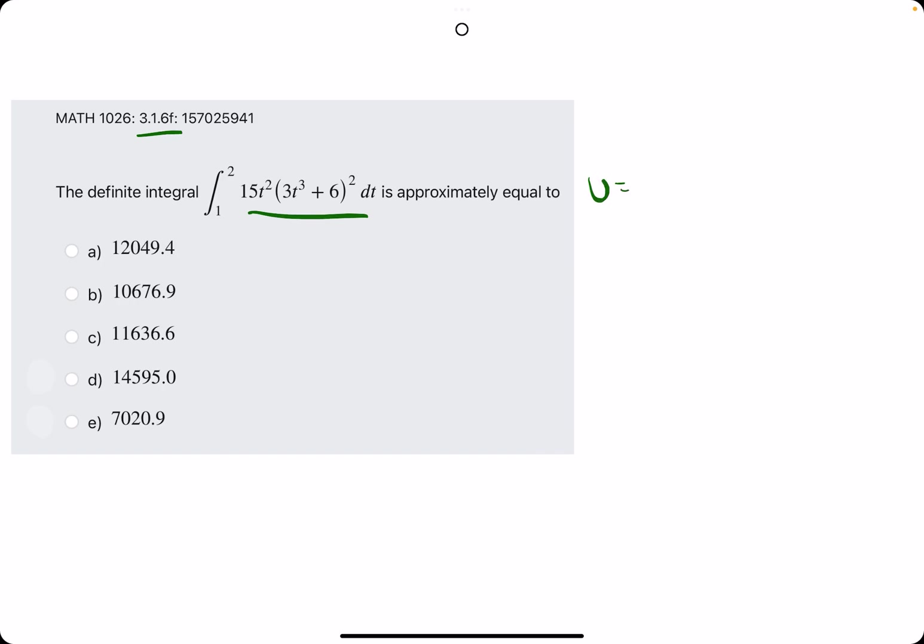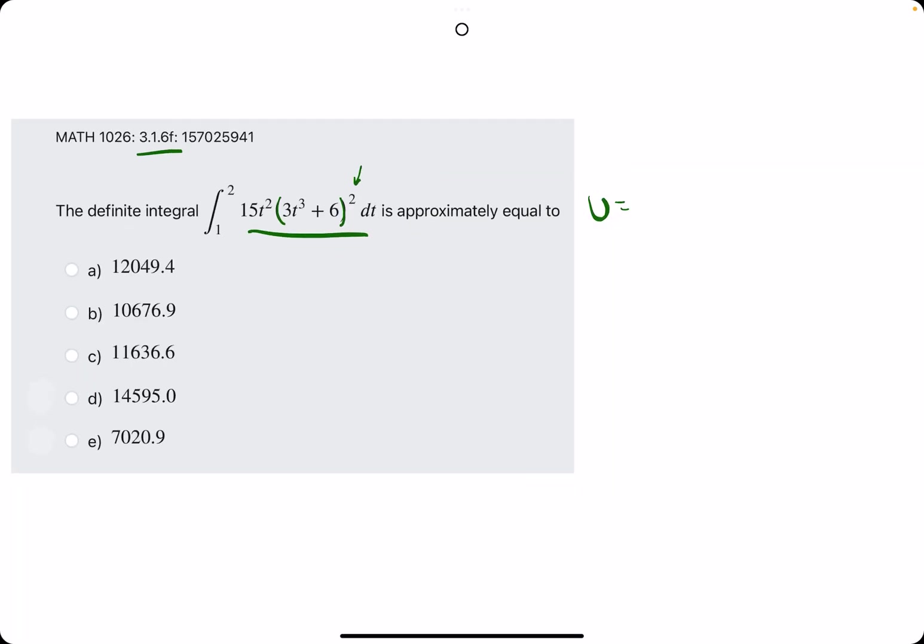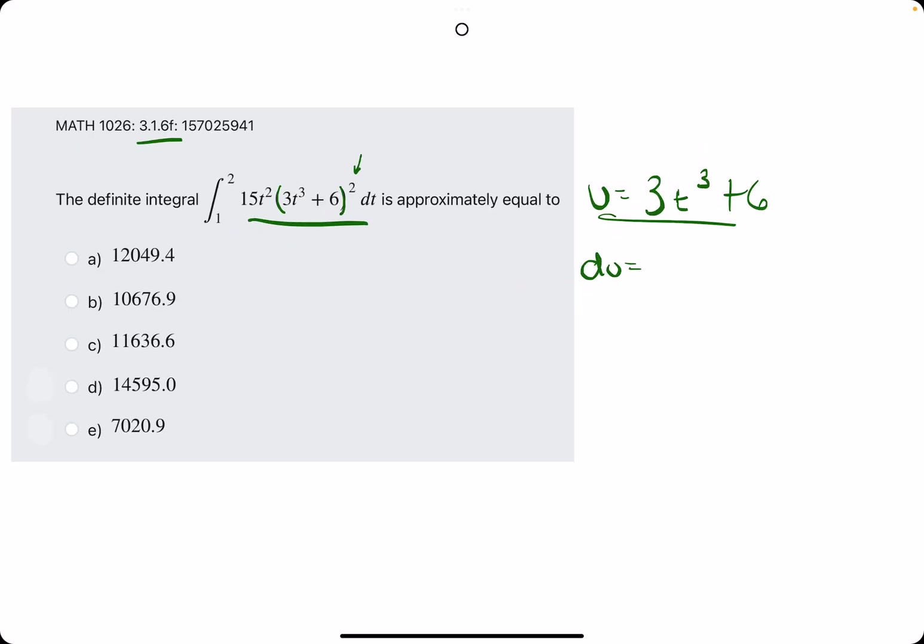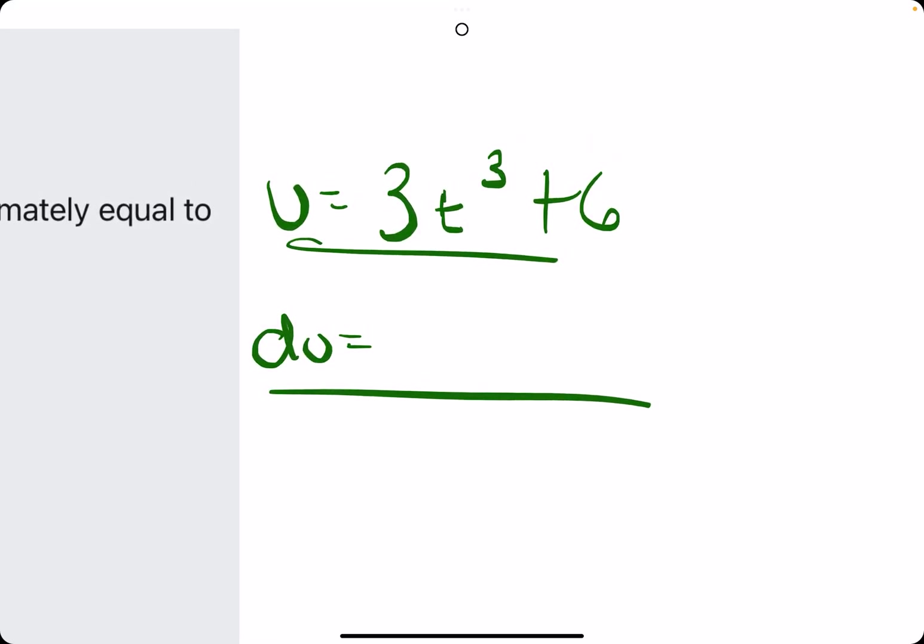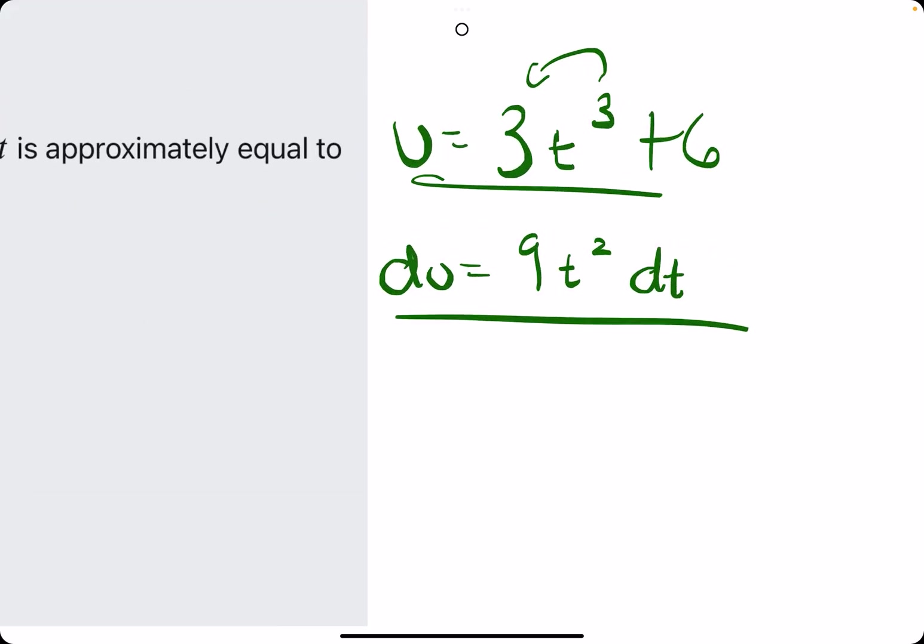We first want to identify what our u is. Generally, u is what's inside parentheses being acted upon by some other piece, and that is the squared in this case. So, usually we can find it in parentheses, and as other exceptions to that pop up, we can discuss them. So, u is 3t³ + 6, so we want to find du next, the derivative of u. So, taking the derivative, 3 times 3 is 9, keep the t, subtract 1 from the exponent.